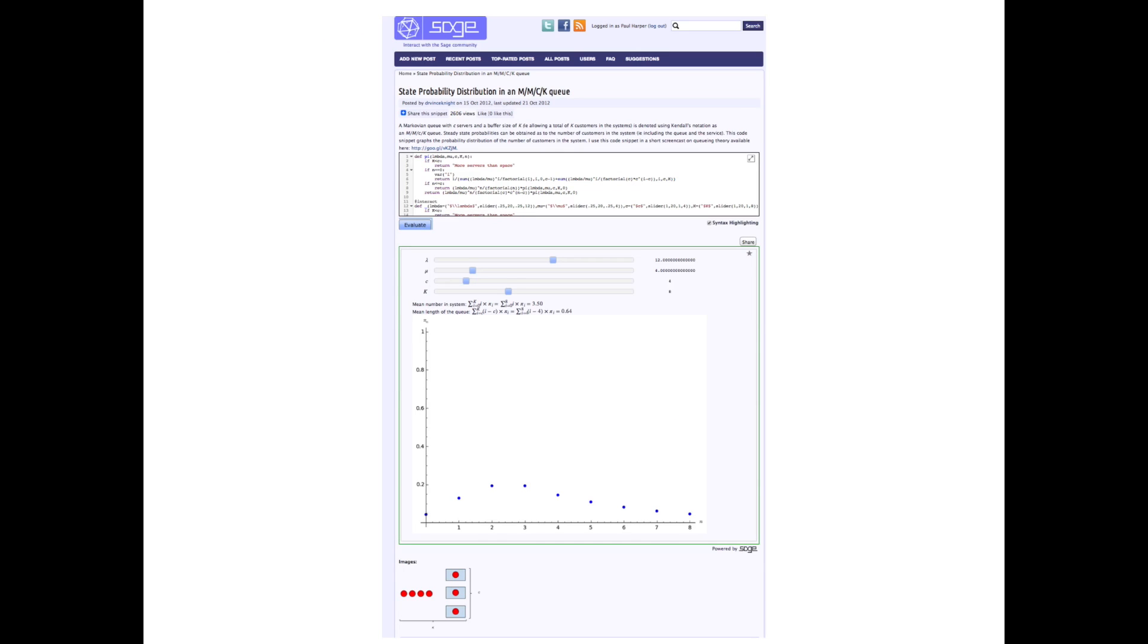Again, there is a nice example of some SAGE code available to play with on Sage Interact, written by my colleague Vince Knight. This allows you to change the values of lambda, mu, c and k, and look at the resulting calculations.